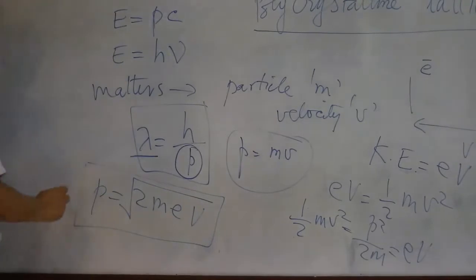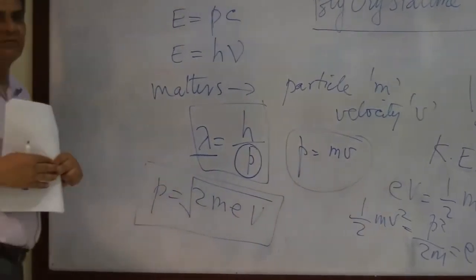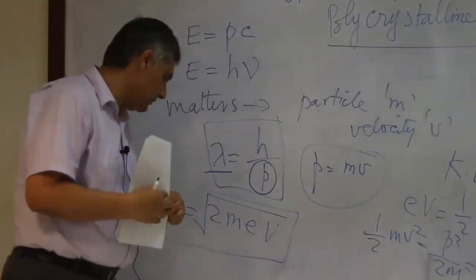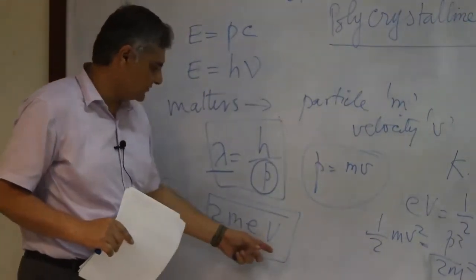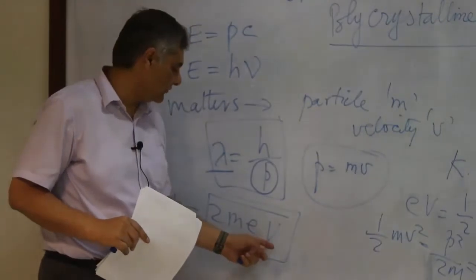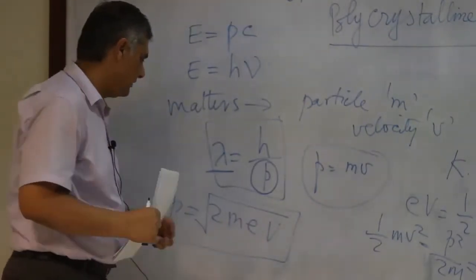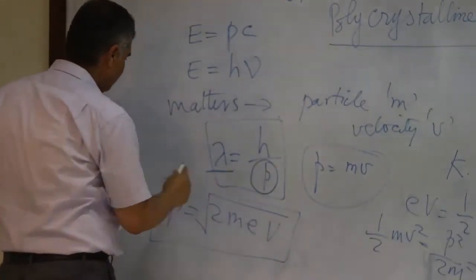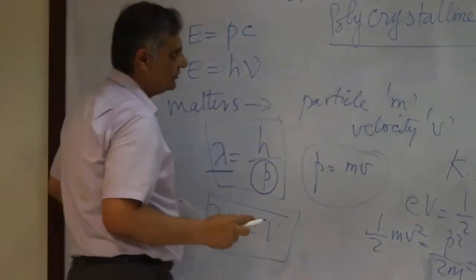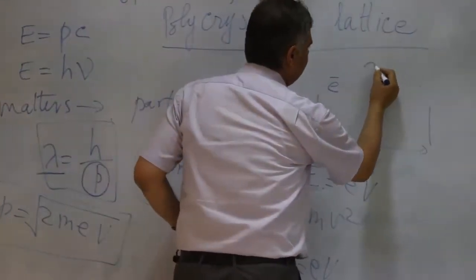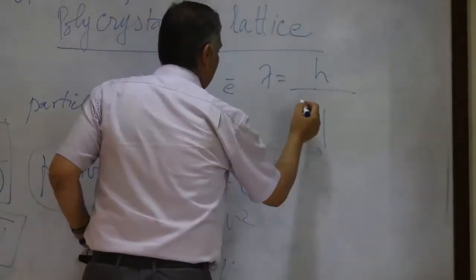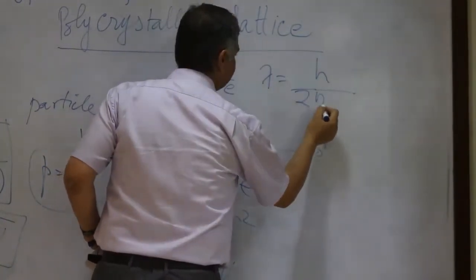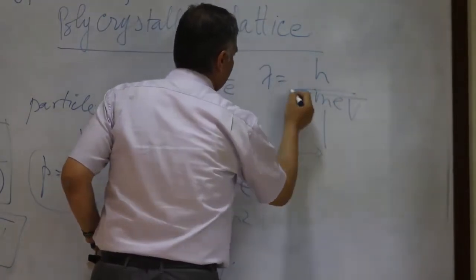When we accelerate the electron in the electric potential, we can find its momentum, which is directly proportional to the square root of the voltage applied. We can write lambda as equal to H over square root of 2mEV.